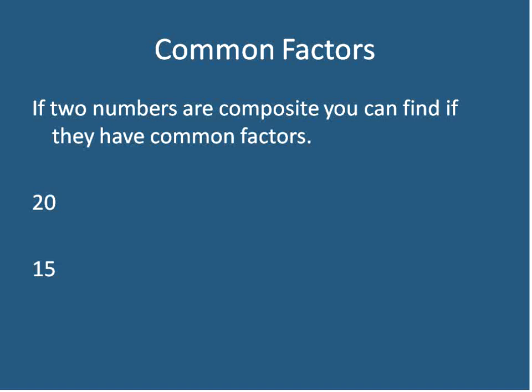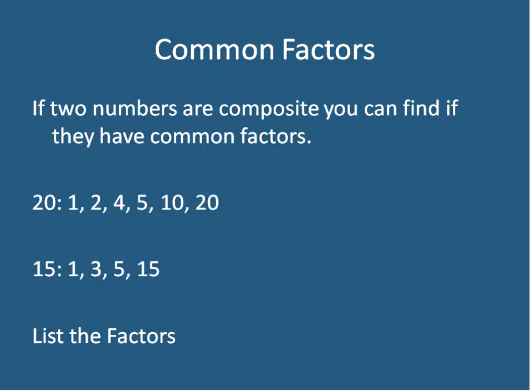Here's an example of how we would find if these two numbers have any common factors. You list all the factors of these two numbers. The factors of 20 are 1, 2, 4, 5, 10, and 20. And the factors of 15 — the numbers that can be multiplied together to give you 15 — are 1, 3, 5, and 15.